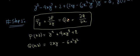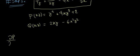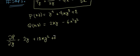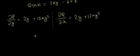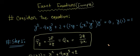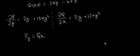Let's compute ∂P/∂y: differentiating y² + 4xy³ + 2 with respect to y gives 2y + 12xy². The constant 2 contributes 0. Now for ∂Q/∂x: differentiating 2xy − 6x²y² with respect to x gives 2y + 12xy². You can see that P_y equals Q_x, so this confirms the equation is an exact equation.